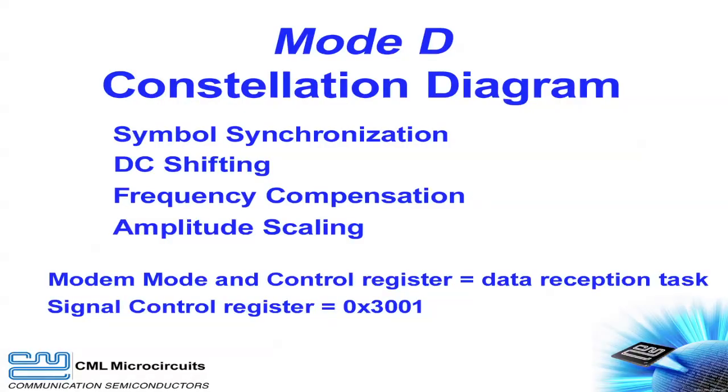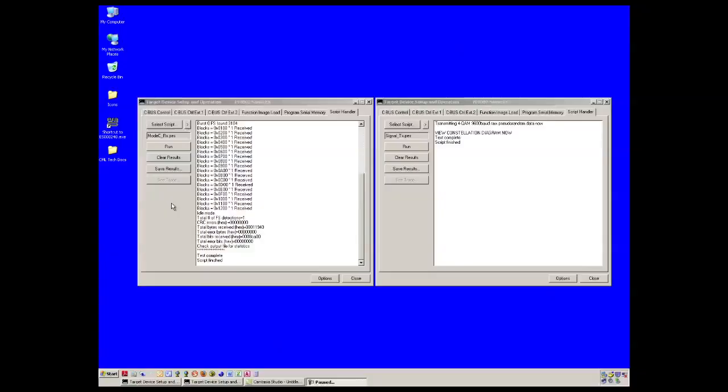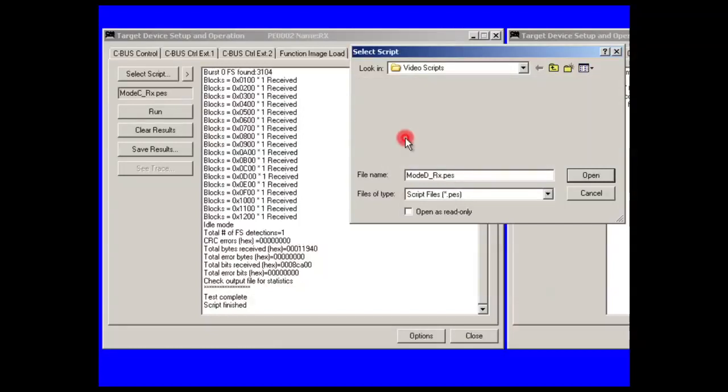The final constellation diagram is for mode D. This mode presents the normalized samples at the symbol timing instant. Mode D adds frequency compensation and amplitude scaling to achieve a very clear constellation diagram. The CMX 7163 extracts data from the signal after it has received the processing in mode D. Launch the mode D receive script and then launch the transmit script.